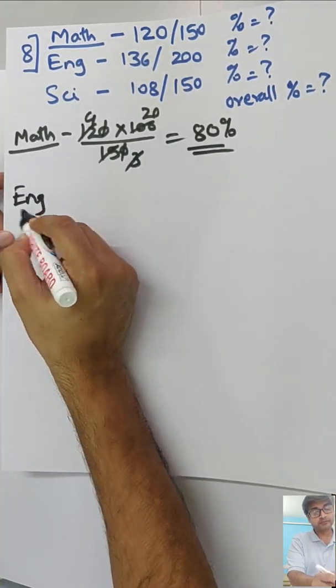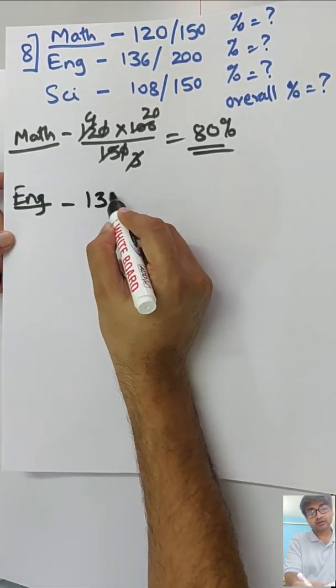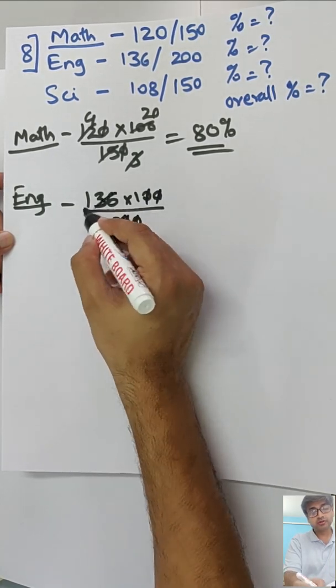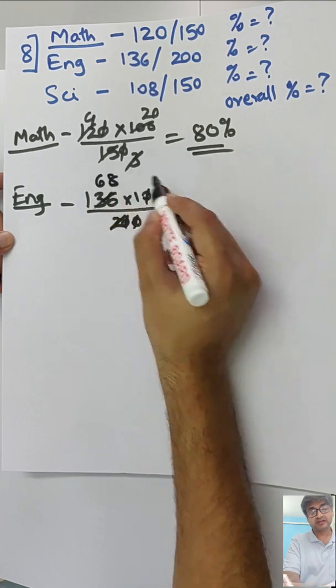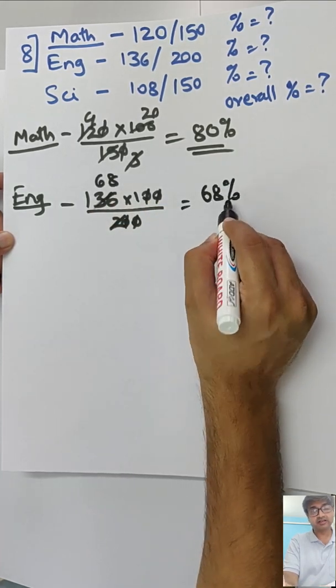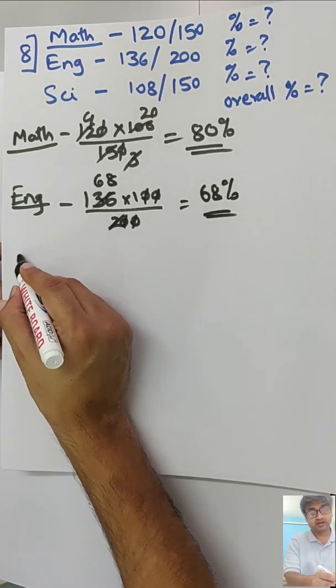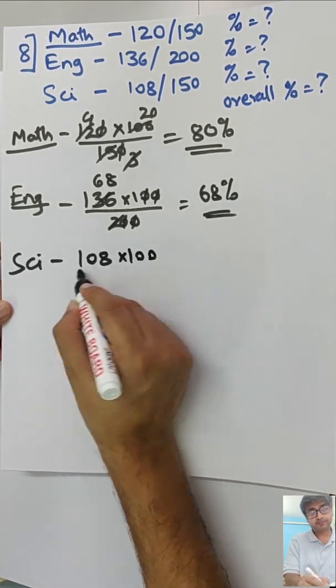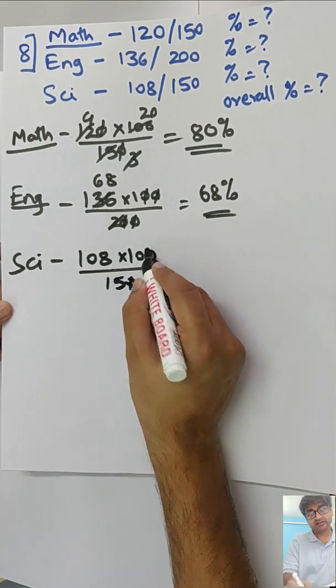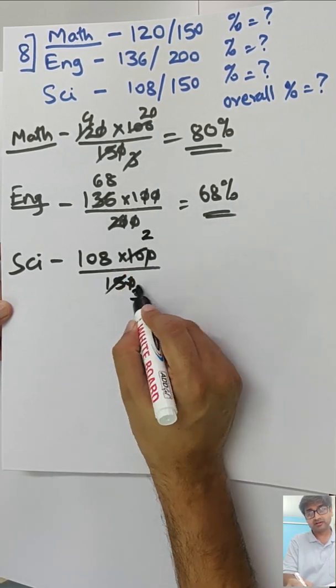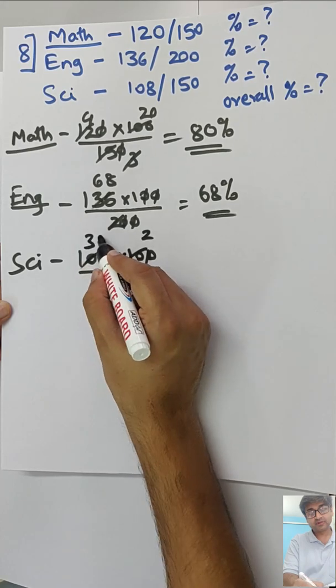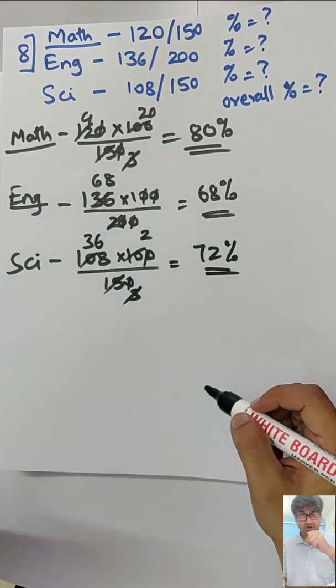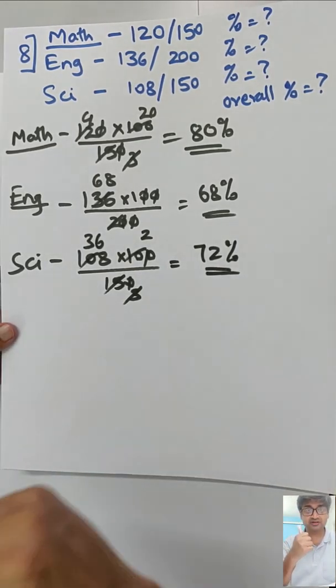Now for English, 136 into 100 upon 200. So in English the child has not scored very well, it's just 68%. And finally science, 108 out of 150. Let's see how good is science now. So 72%. The best is in maths, 80%. But what is the overall percent? Something around 72 to 74 I guess.